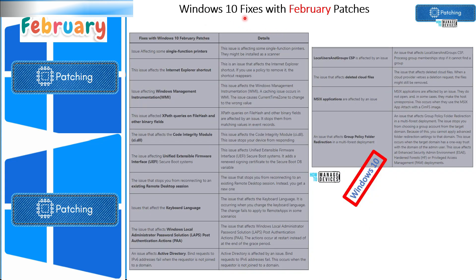Let's look into Windows 10 fixes as part of February Patch Tuesday. A single function printer issue is fixed. Internet Explorer shortcut related issues are also fixed. Keyboard language related issues are fixed with this Patch Tuesday. There are some Active Directory related issues along with IPv6 that are also fixed. There were also some issues with local users and groups CSP in Windows, which got fixed with the February 2024 Patch Tuesday patches for Windows 10.